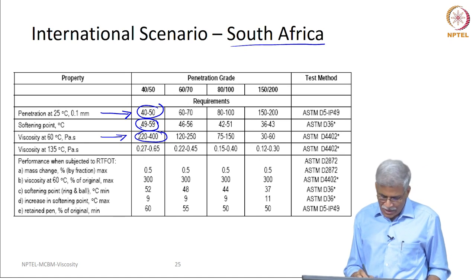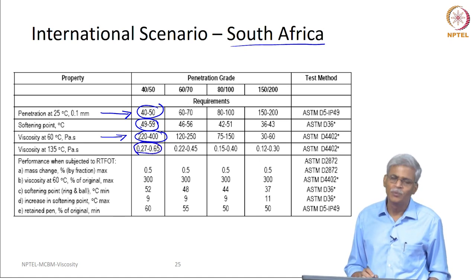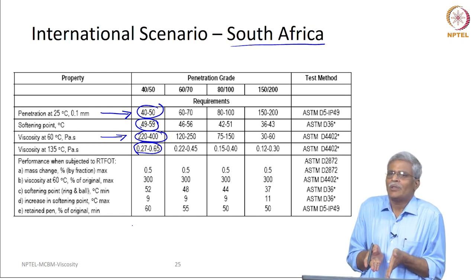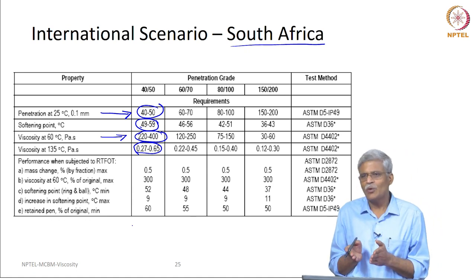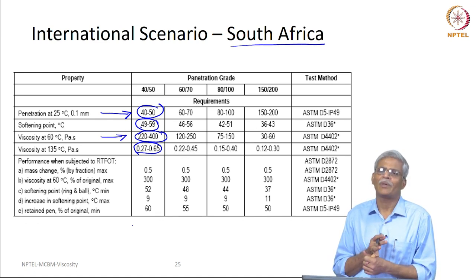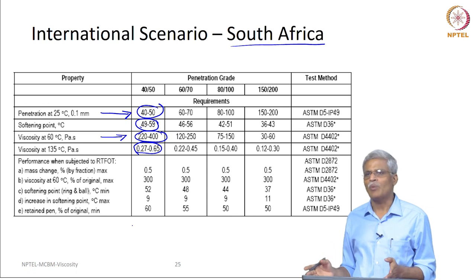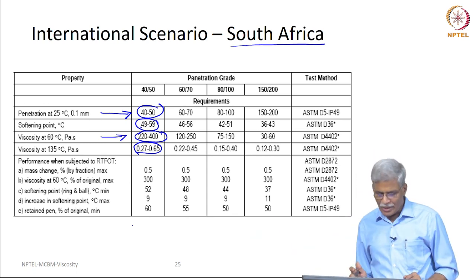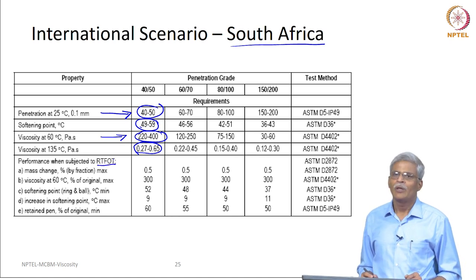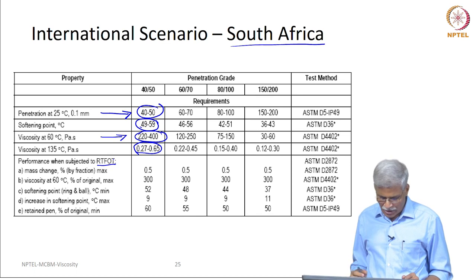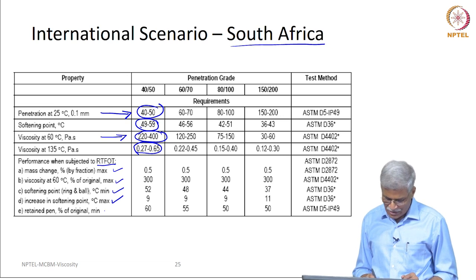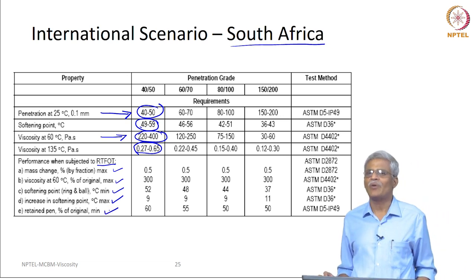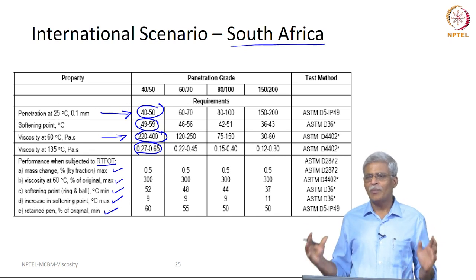In addition, the viscosity at 135 degree centigrade is also bounded. So there is strict quality control necessary to produce bitumen to meet the required specifications in South Africa. All four parameters in unaged conditions have to be bounded — they cannot exceed and go out. When you subject this to short-term aging, the mass change values are given, viscosity values at 60 degree centigrade are given, softening point values are given, and the increase in softening point as well as the retained penetration are given. This is by far a much stricter and completely bounded specification.